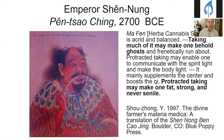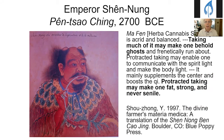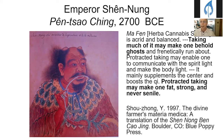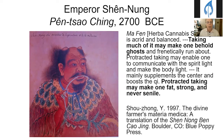We are going to jump back and forth in history to make some points about the attributes of cannabis. This one is from China, from an oral tradition dating to 2700 BCE. It's obvious they knew the psychoactive properties, because they talk about taking much of it may make one behold ghosts — a reference to hallucinations. Of interest also is that protracted taking of cannabis may make one fat, strong, and never senile.